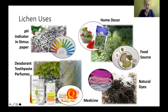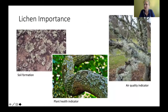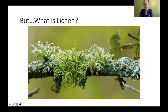Lichen have many different uses. They can be used as a pH indicator on litmus paper, and have been found in deodorants, toothpaste, and perfumes. Reindeer moss used in home decor is actually a lichen, not a moss. Some people eat lichen, and it's also used in medicine and as dye. Lichen are important for soil formation, can indicate plant health, and are very good indicators of air quality.